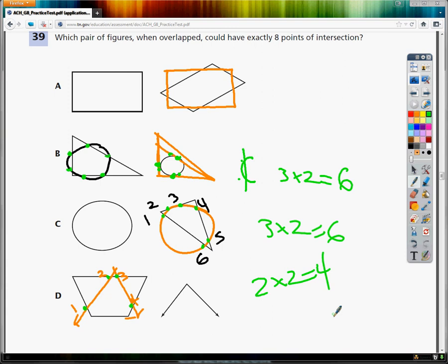Now, for option A, they're both 4-sided, so I'm not as limited as in previous problems. I'm going to find the intersection points. 1, 2, 3, 4.